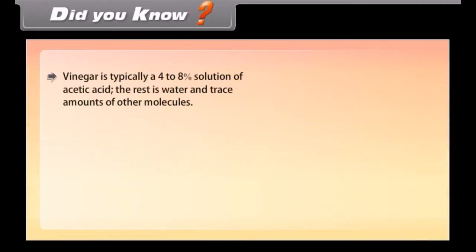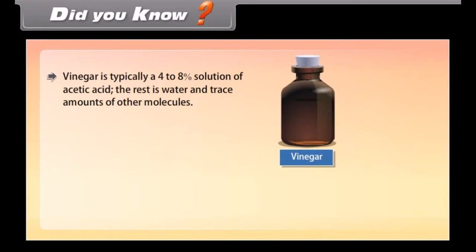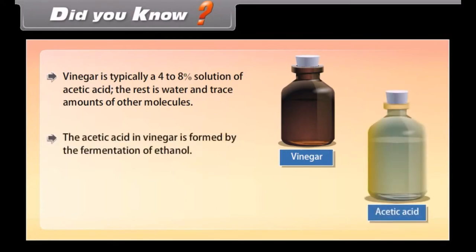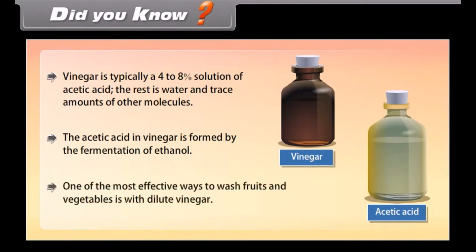Did you know? Vinegar is typically a 4-8% solution of acetic acid, and the rest is water and trace amounts of other molecules. The acetic acid in vinegar is formed by the fermentation of ethanol. One of the most effective ways to wash fruits and vegetables is with dilute vinegar.